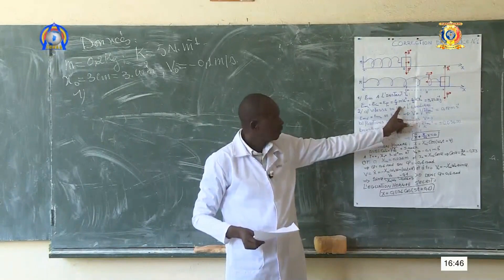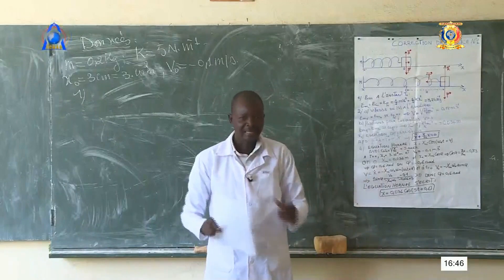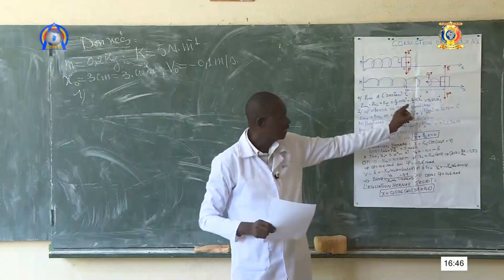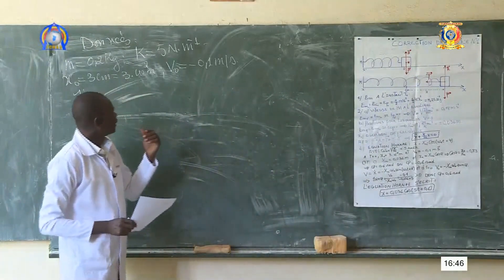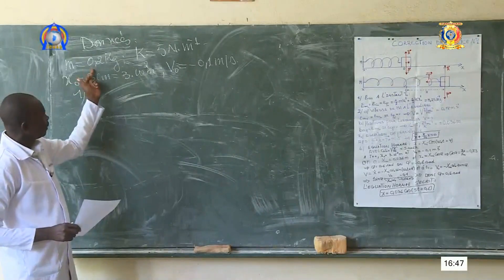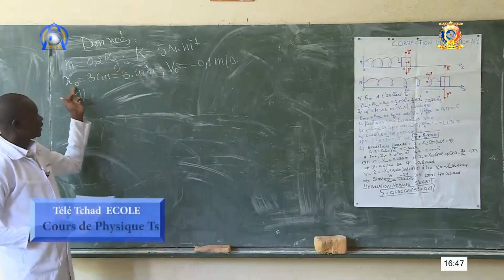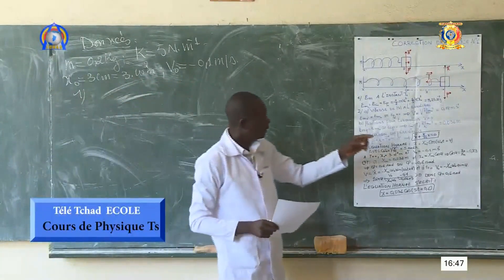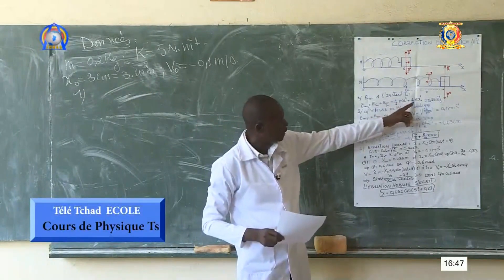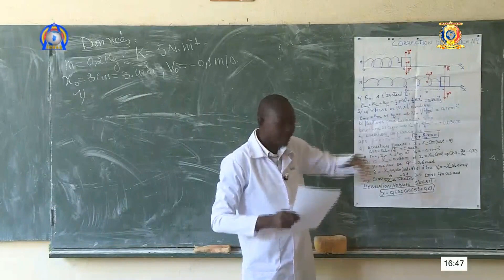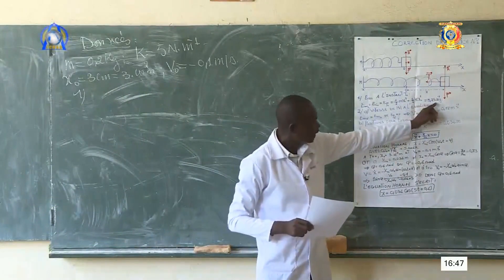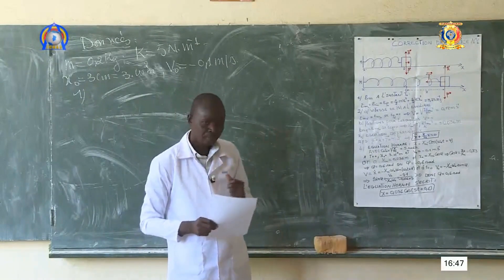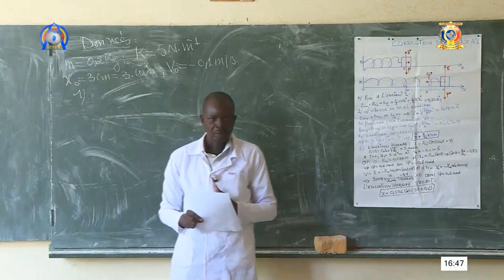L'énergie cinétique est ½M·V0², et l'énergie potentielle élastique est ½K·X0², car on est à l'instant T0. Vous avez M = 0,2 kg, K = 5 N/m, X0 = 3×10⁻² m, V0 = -0,1 m/s. En remplaçant ces valeurs, vous allez trouver Em0 = 3,25×10⁻³ J. Voilà la réponse à la question 1.